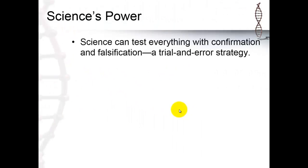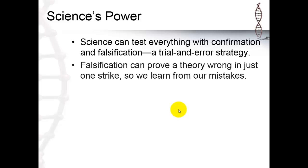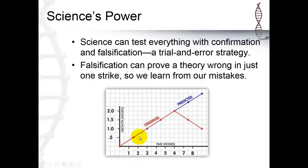Science is powerful again. It can test everything with confirmation and falsification. It's like a trial and error strategy. That's how science works. Falsification can prove a theory wrong in just one strike. So we can learn from our mistakes. If we observed these values and we predicted those values, falsification can tell us that our predictions were wrong. Something was wrong with our theory.